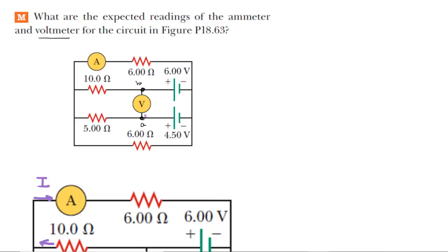Now there are many paths we could travel to go from point A to point B, but the simplest path here will be to go in a counterclockwise direction. As we move from point A to point B, we need to keep track of potential changes. We'll write out the potential difference traveling from point A to point B, and this will equal the following. Moving along the loop in a counterclockwise direction, the first circuit element we encounter is this battery.